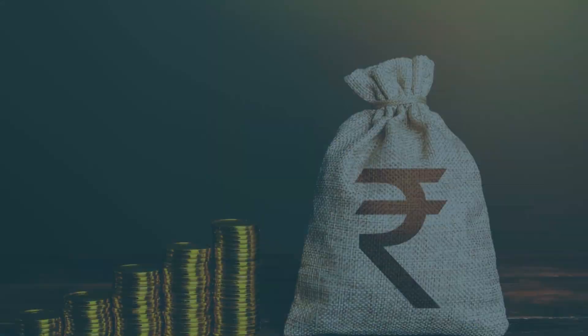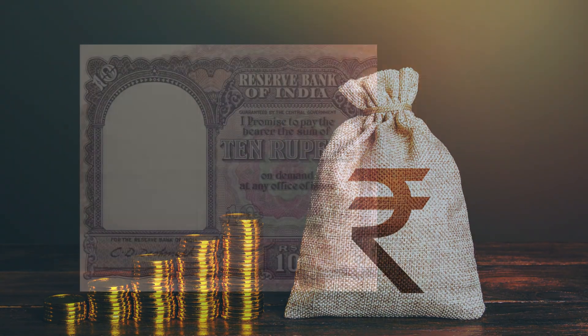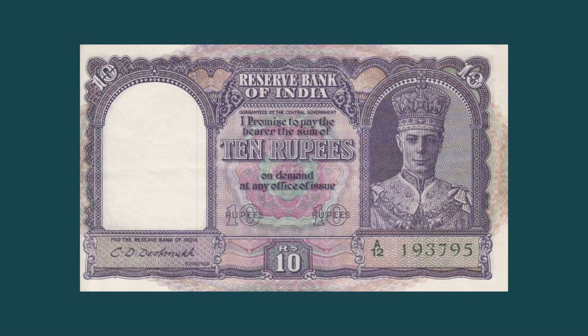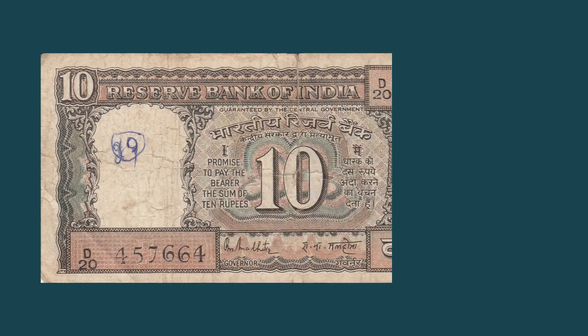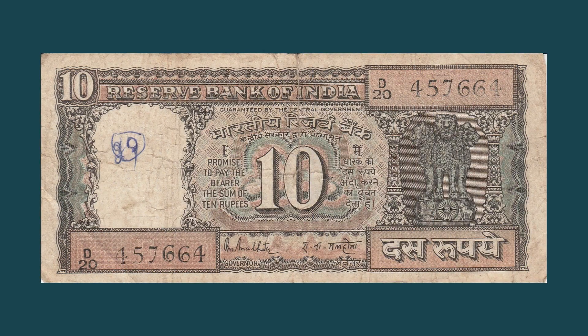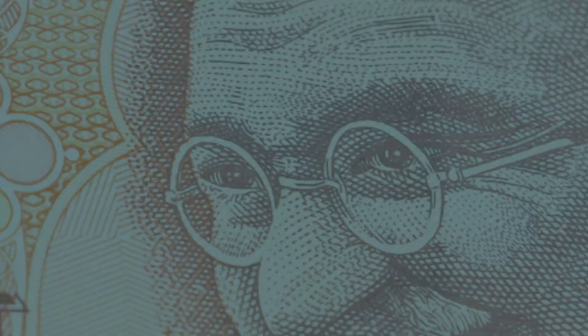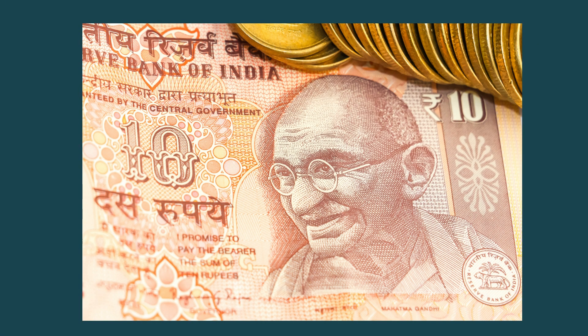Looking at Indian currency history, there were series like the Johabs 6 series and the Lionhead series. Then came the Mahatma Gandhi series. Earlier denominations included the 10-rupee and 5-rupee notes.